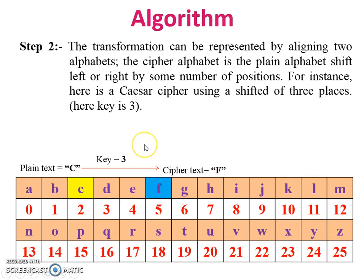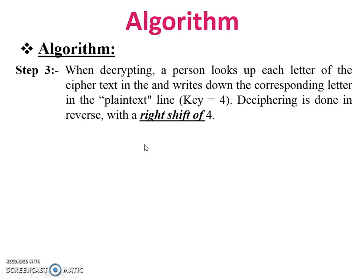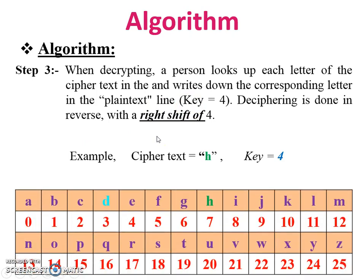This is the encryption. Step 3: When decrypting, a person looks up each letter of the ciphertext and writes down the corresponding letter in the plaintext line. Key = 4, so deciphering is done in reverse with a right shift of 4, because key is 4. This is the example.